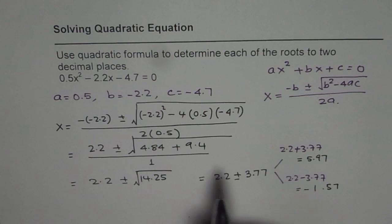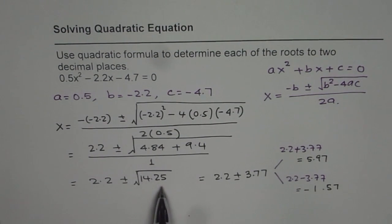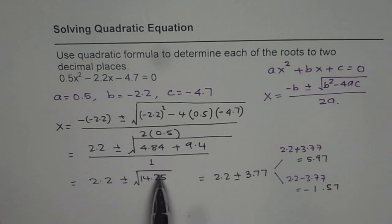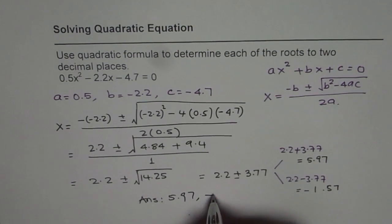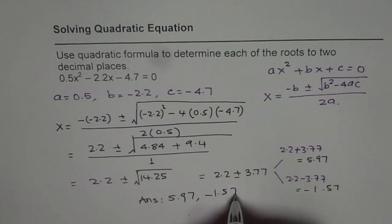So these are the two answers to two decimal places. You can also use your calculator and calculate all the values in one shot. That is the preferred way. I went through these steps to show you how to get the answer. The answer is 5.97 or -1.57.